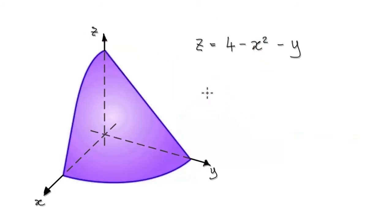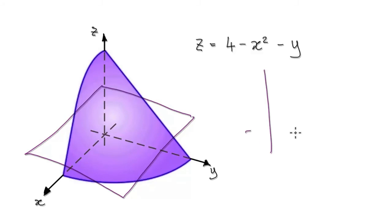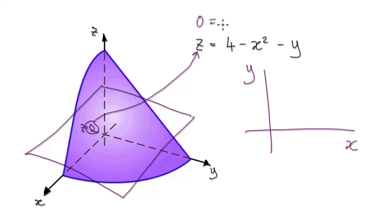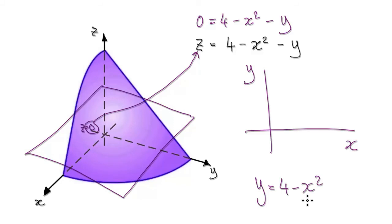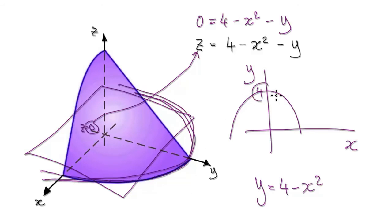Now let's have an understanding of what it means on the xy plane. Looking at the xy plane, the elevation would be z equals 0. So you put 0 into the z, and the whole thing becomes 0 equals 4 minus x squared minus y. Make y the subject: y equals 4 minus x squared. So this is a negative quadratic with an intercept of 4, meaning the intercept is 4 and the x-intercept is 2.